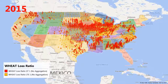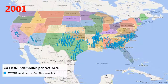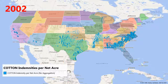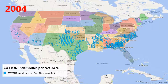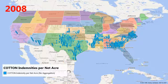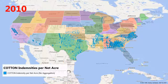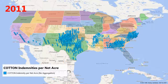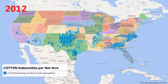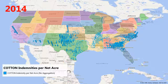This scene shows national cotton indemnities received by each county from 2001 to 2015. During the 15-year time period, the indemnities received were the lowest in 2002 at about 48 million, and highest in 2011 at about 2.0 billion.